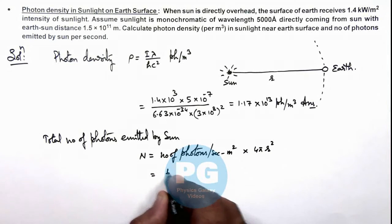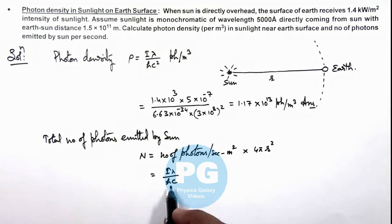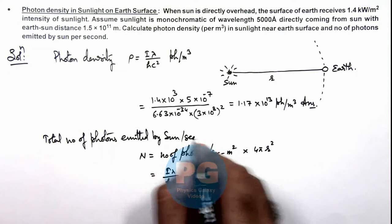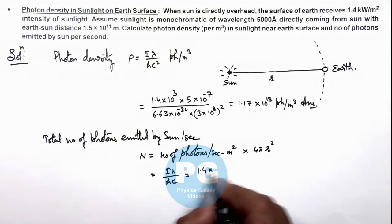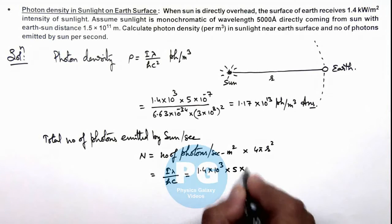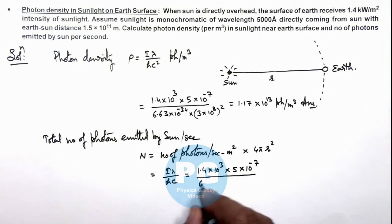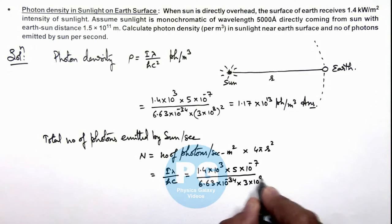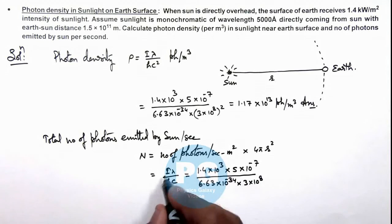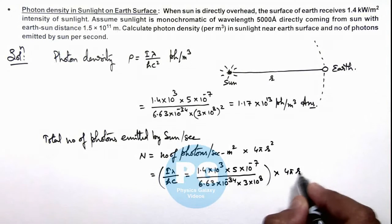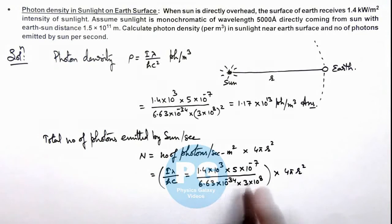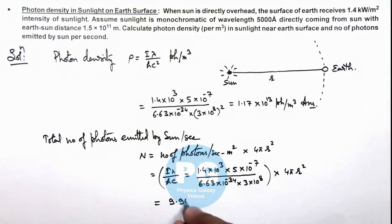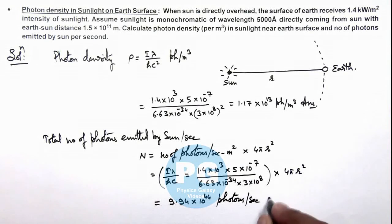This can be written as Iλ/hc — number of photons per second per meter square — multiplied by 4πr², which gives us the number of photons emitted by the sun per second. That equals 1.4 × 10³ × 5 × 10⁻⁷, divided by 6.63 × 10⁻³⁴ × 3 × 10⁸, then multiplied by 4πr². On substituting the value of the Earth-Sun distance and simplifying, this gives us 9.94 × 10⁴⁴ photons per second — that is the result of this problem.